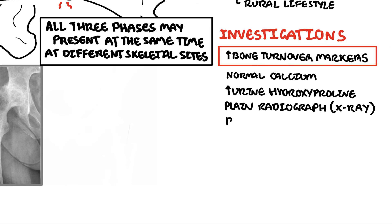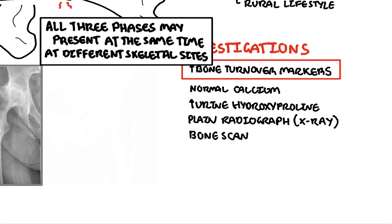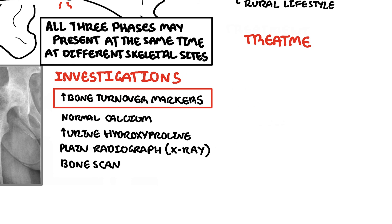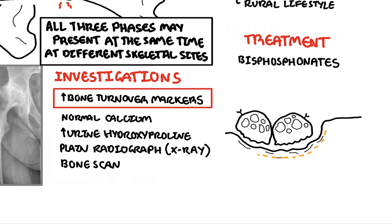A bone scan is also very useful and is performed in people with Paget's disease to assess for any active disease. Treatment of Paget's disease includes anti-resorptive therapy, such as bisphosphonates. Bisphosphonates work by inhibiting osteoclastic activity, thereby reducing bone resorption. They do this by laying themselves down on bone, where they are absorbed by osteoclasts and induce apoptosis — osteoclast cell death.